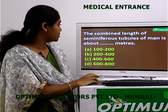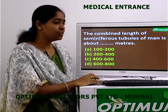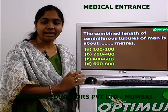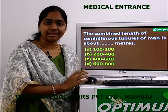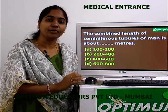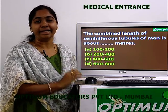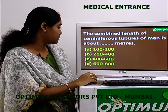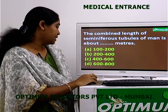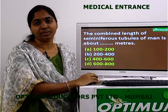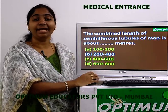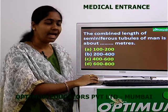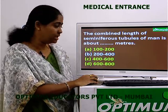Question 4: The combined length of seminiferous tubules of man is about — meters. Options: 100–200, 200–400, 400–600, 600–800. Convoluted seminiferous tubules are present inside the testes. If you connect all of them end to end for a normal adult male, the combined length is close to 200 to 400 meters — the correct answer.